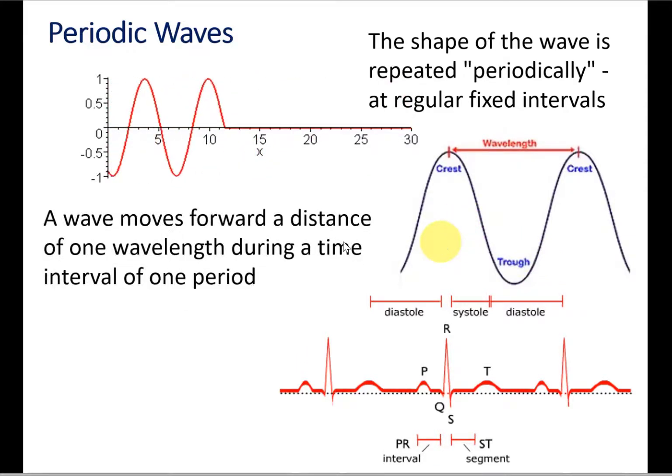A wave moves a distance of one wavelength during a period. That means in one complete oscillation, the wave moves one wavelength, and the time taken is one period of oscillation.